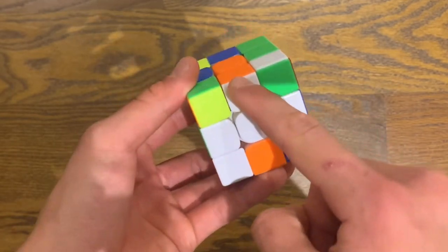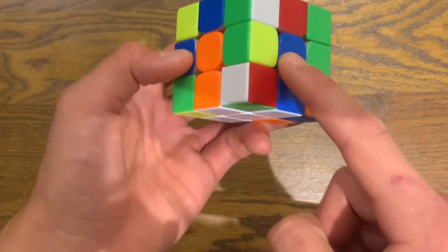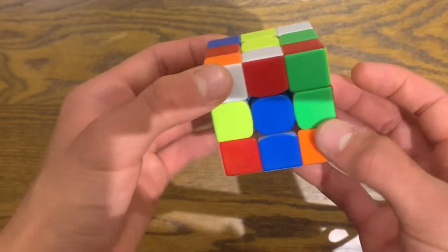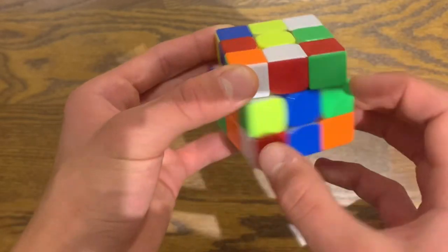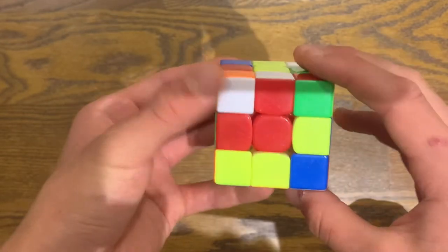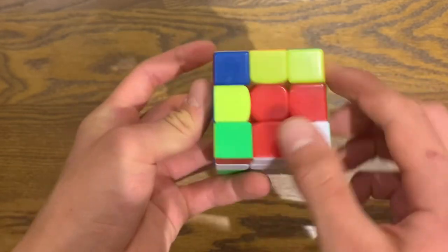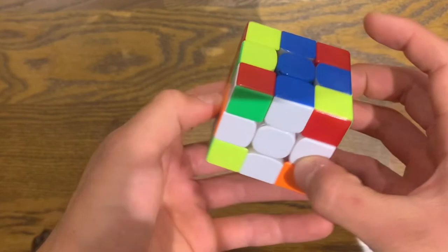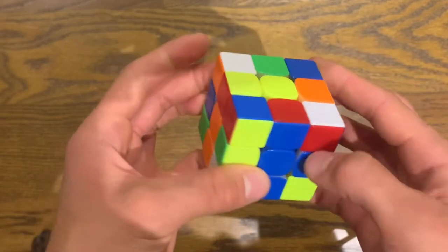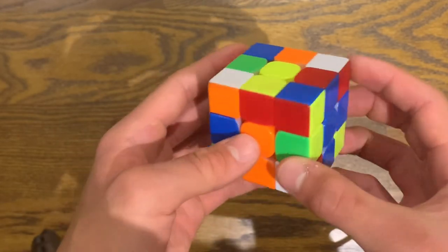Now I have three edge pieces. Almost done my cross, my white cross, with all the colors matched. I have one more piece to go. I look for it right here. Move the bottom two layers only. And there you go. These are matched. I just bring it down. And I have my white cross. This is a major step. It's very simple. Just take some time to learn it, and then you'll be on your way.